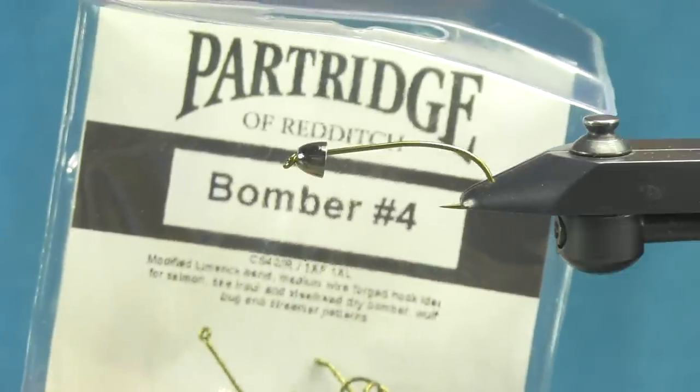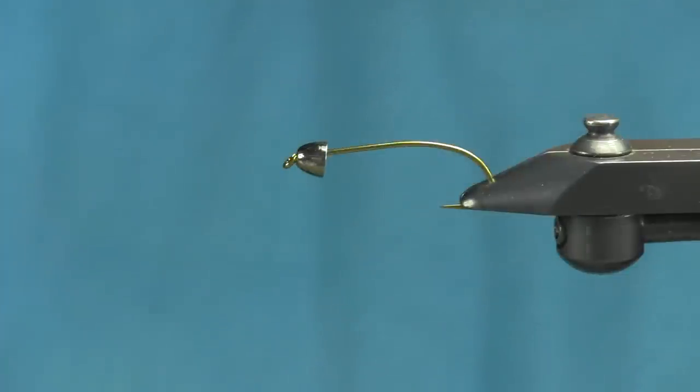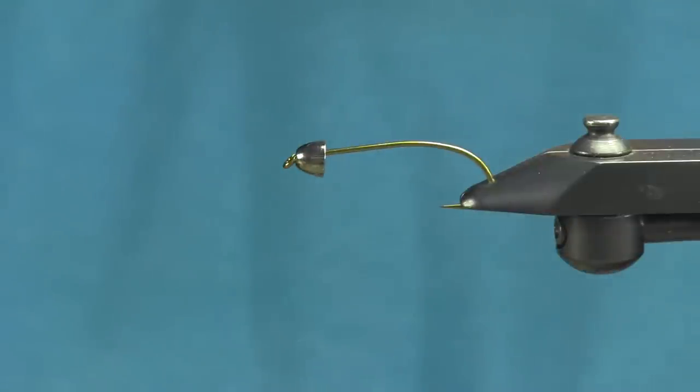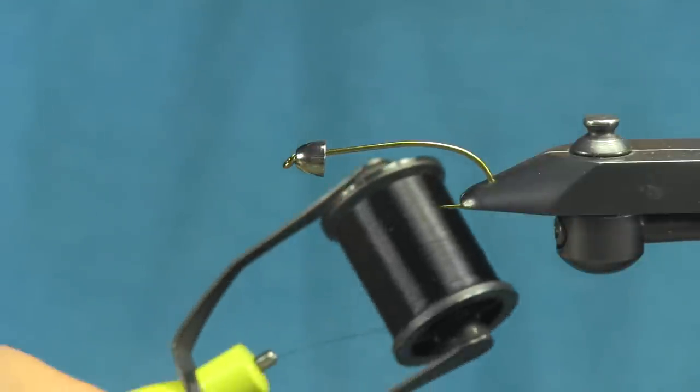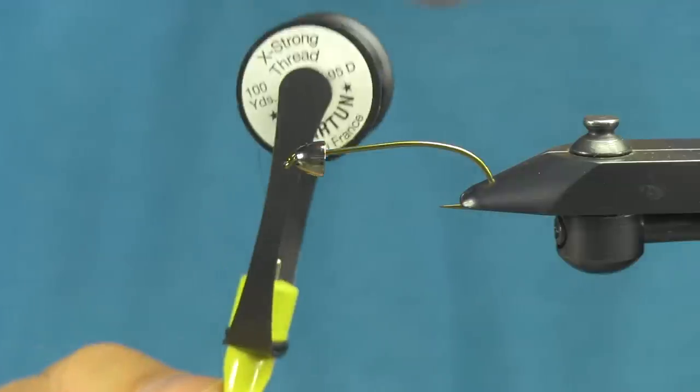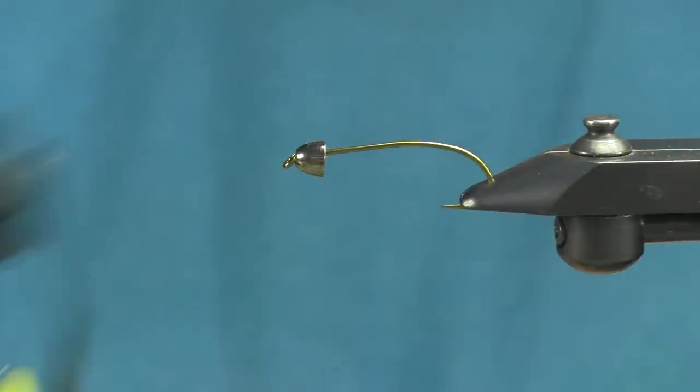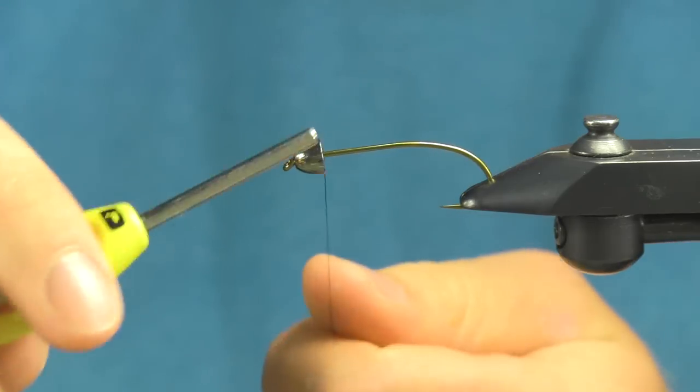In the vise right now, I have a Partridge bomber size 4 hook. Not the typical hook you'd use, but it has a tungsten cone head on it right now. And I'm going to be using the Lagartun 95 Denier Extra Strong Thread in black. I'm going to run a base.